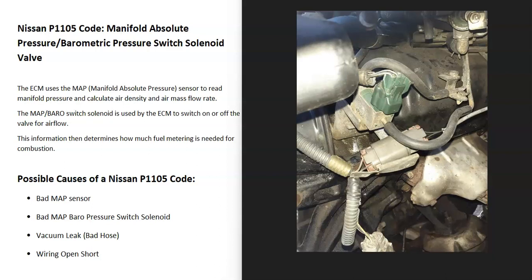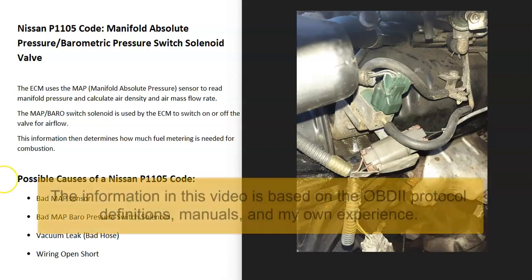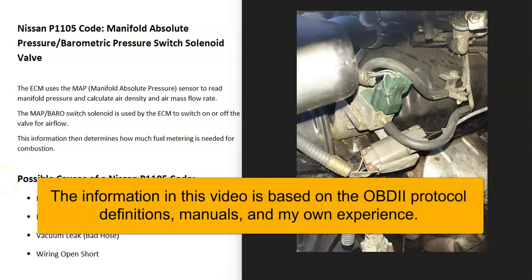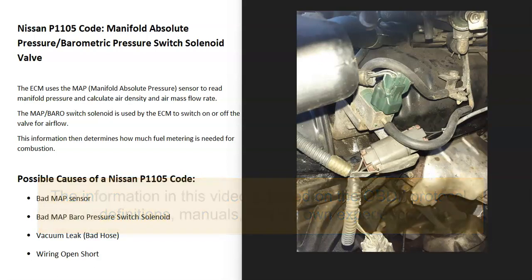Today I'm going to talk about a Nissan with the P1105 code — what it is and how you go about fixing it. The Nissan P1105 code is a manifold absolute pressure barometric pressure switch solenoid valve code.